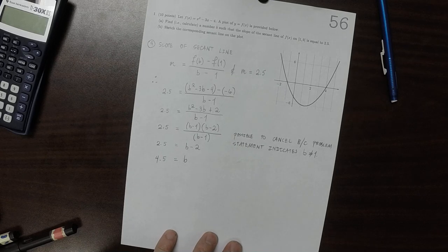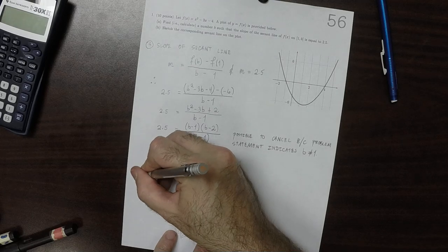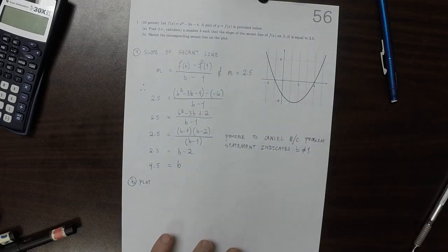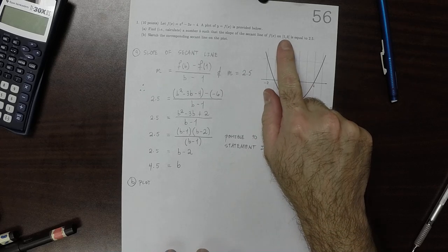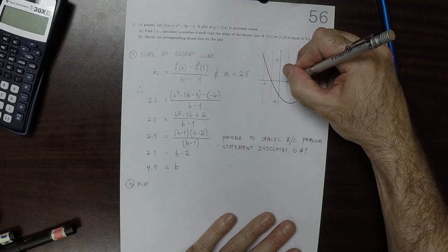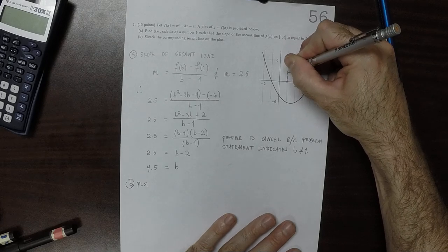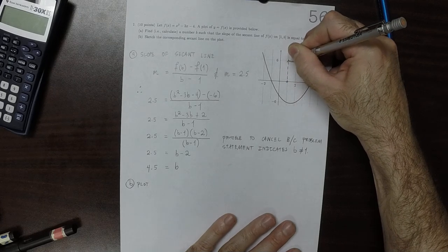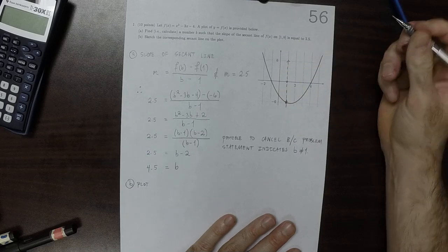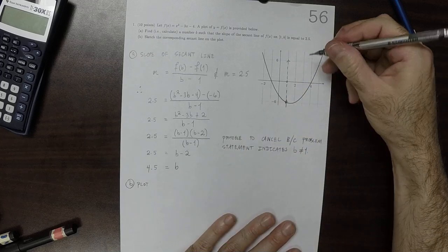So then for part b, I'm going to plot. OK. So from 1 to 4 and 1 half. OK. Well, this is 1. So that's one of the points. And the secant line looks like this, and 4 and 1 half.